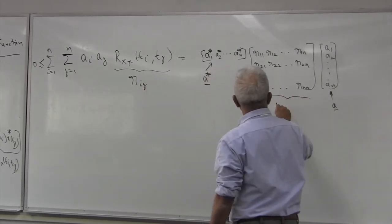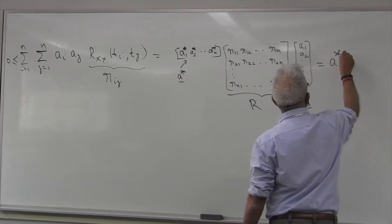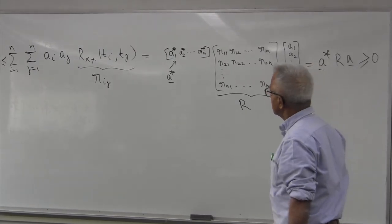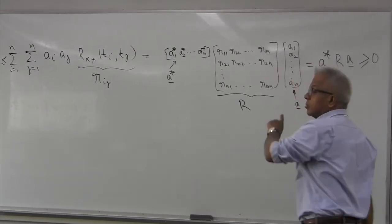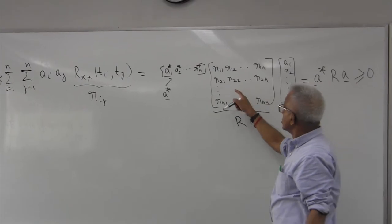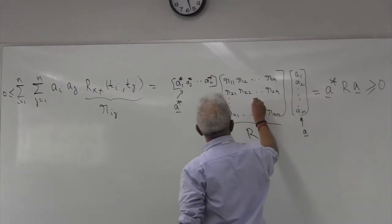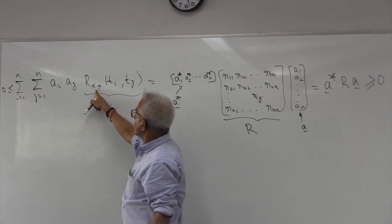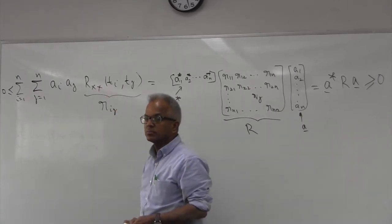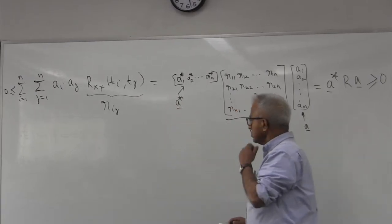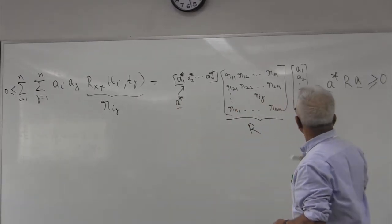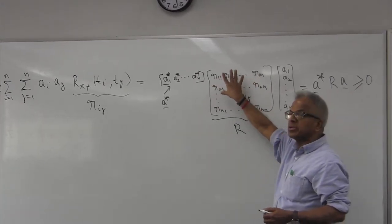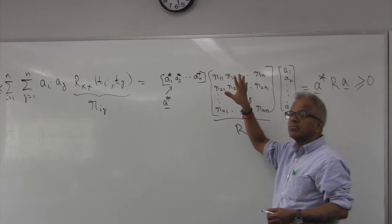Is always positive, where R is the autocorrelation matrix. So I can write this as A transpose R A is always positive, where R is the autocorrelation matrix. It's a matrix now with Rij entries, precisely this, the autocorrelation function evaluated Ti, Tj. So this is non-negative, so we call this matrix.